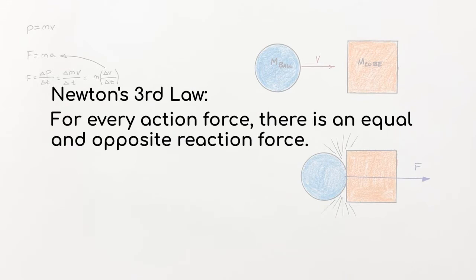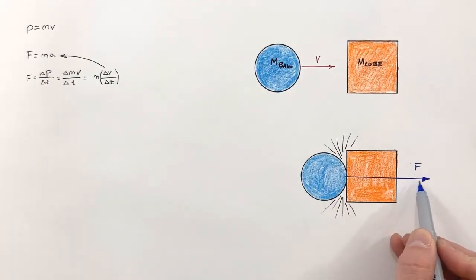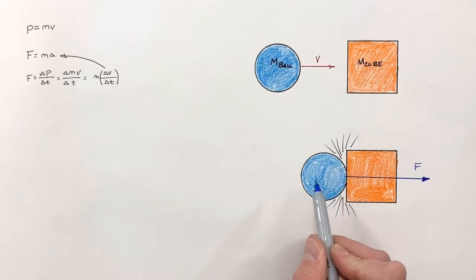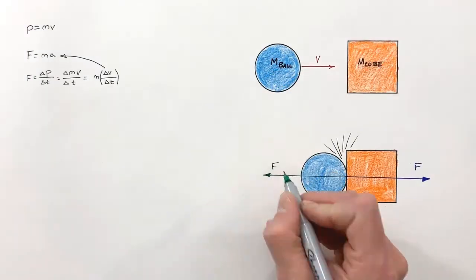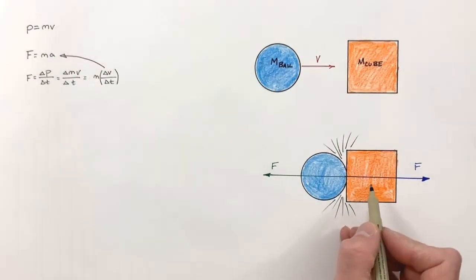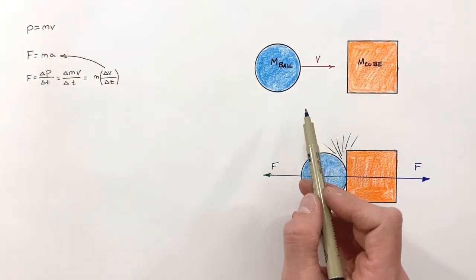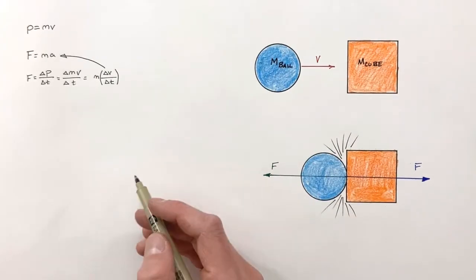We also need to look at Newton's third law. Newton's third law says for every action force there's an equal and opposite reaction force. In this case, if the ball is pushing forward on the cube with some force F, then the cube must be pushing backwards on the ball with a force that is equal in magnitude. To understand how Newton's third law combined with our understanding of momentum can allow us to draw great conclusions about collisions, I want to look at impulse.